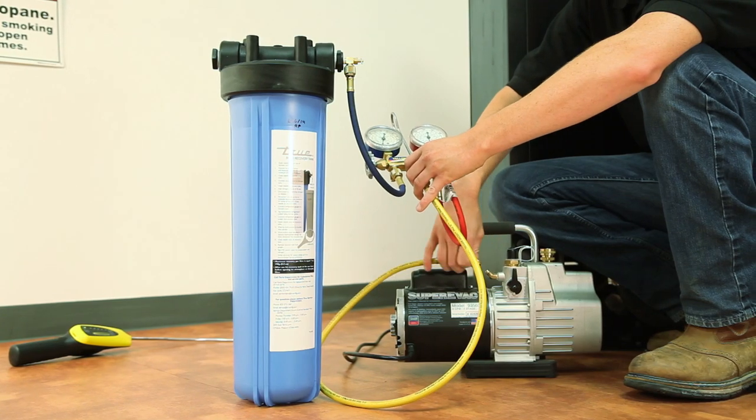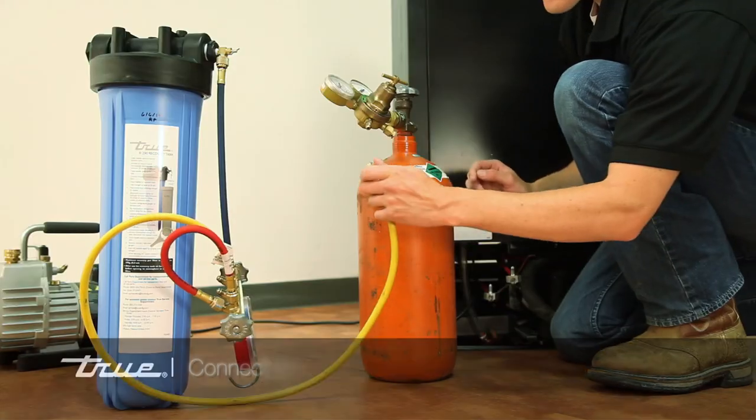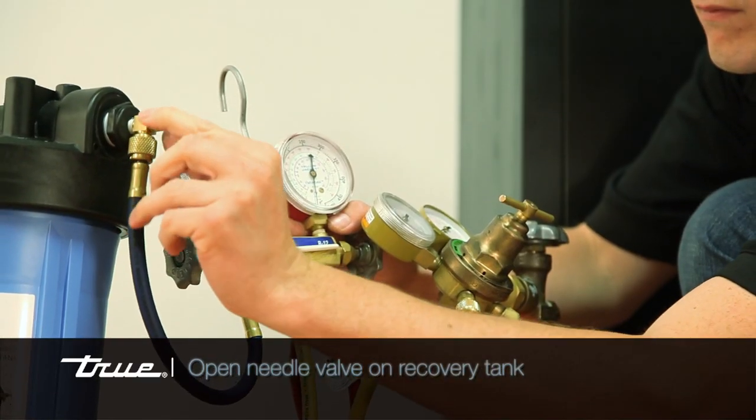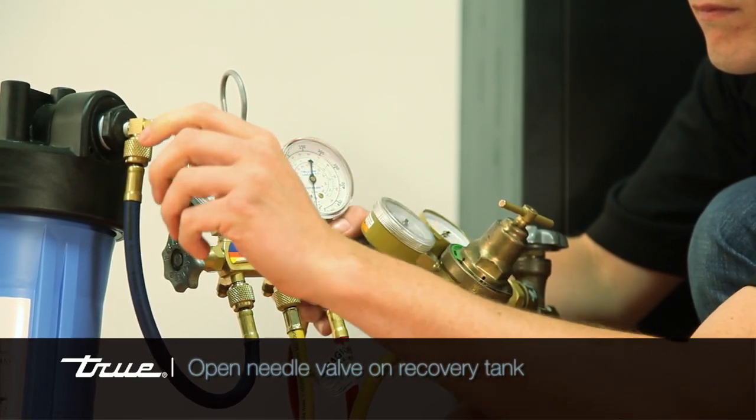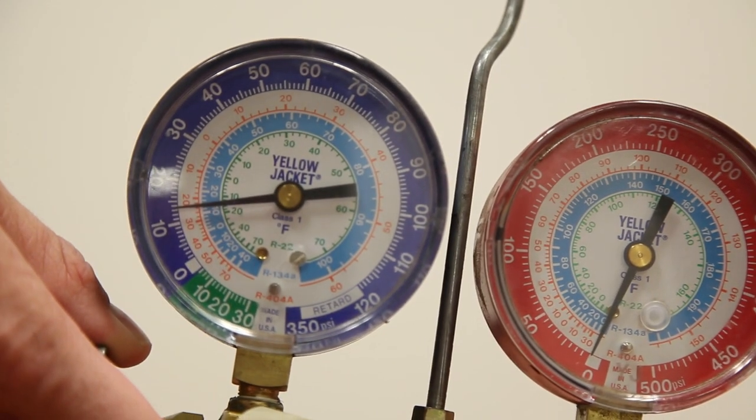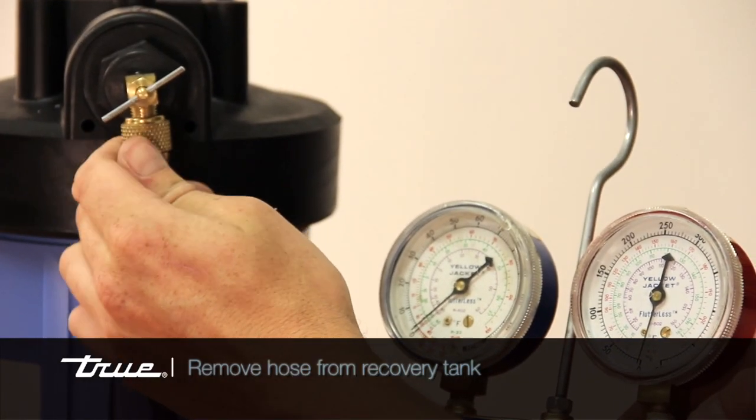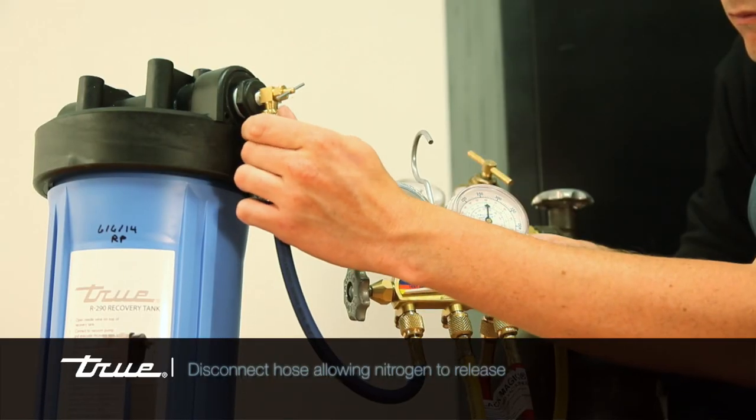Disconnect your gauges from the vacuum pump and connect to your nitrogen tank. Open the needle valve on the recovery tank, then break the vacuum by adding 13 pounds of nitrogen into the tank. The next step is to remove your hose from the tank and release the nitrogen.